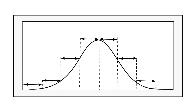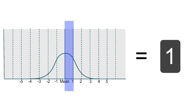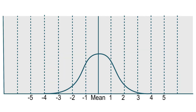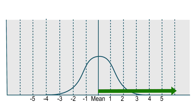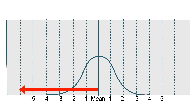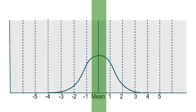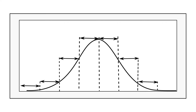The fourth term is standard normal distribution, also called the Z-distribution. It is a special normal distribution whose mean is always 0 and standard deviation is always 1. The fifth term is Z-score, used only in Z-distributions. It shows how many SDs away from the mean each number in the set is. A positive Z-score means the number is greater than the mean; a negative Z-score means it is less than the mean; a Z-score of 0 means the number equals the mean. Any normal distribution can be standardized by converting its values into Z-scores.